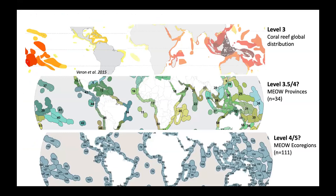It is a matter of discussion — a definitional issue for the RLE process — as to what level the analysis we have done is at. Level three is the global coral reef distribution. The definition of the RLE units for the ecoregions we have applied appears to be around level four in the typology. But there are 111 MEOW ecoregions that have coral reefs in them, so there are questions about whether this province level — the Western Indian Ocean, region 20 — is somewhere between level three and four. It doesn't make a huge difference for implementing when you're using data and ecological knowledge, but it does make a difference longer term in terms of definitions.